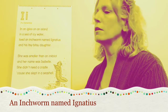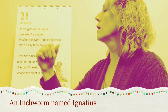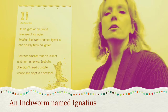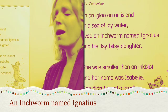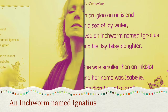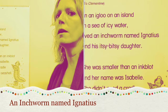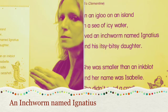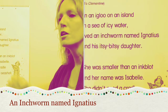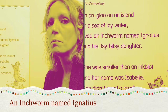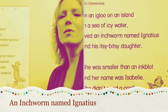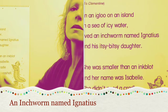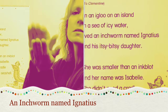This is our I song. We have an uppercase I and a lowercase I, and this is sung to the tune of Clementine. Are you ready? In an igloo on an island in a sea of icy water lived an inchworm named Ignatius and his itsy bitsy daughter. She was smaller than an inkblot and her name was Isabel. She didn't need a cradle cause she slept in a seashell.